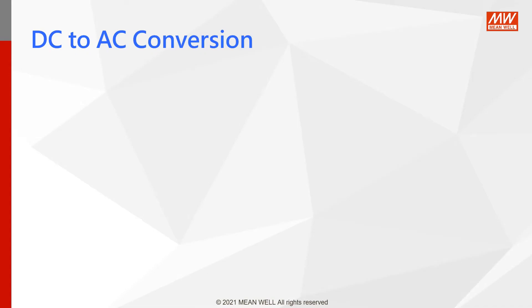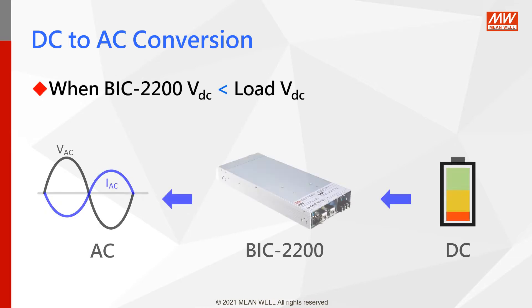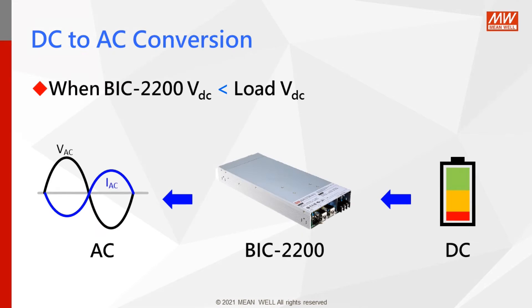On the contrary, the BIC changes DC to AC and feeds the stored energy back to the AC grid when it detects that its target voltage is lower than the DC end voltage.